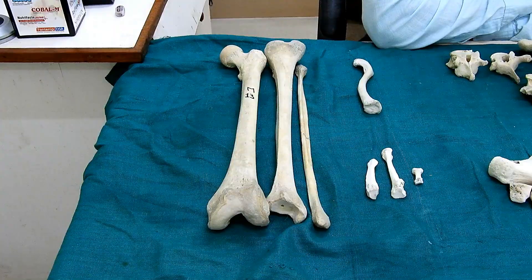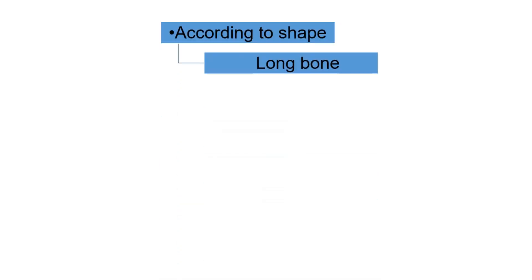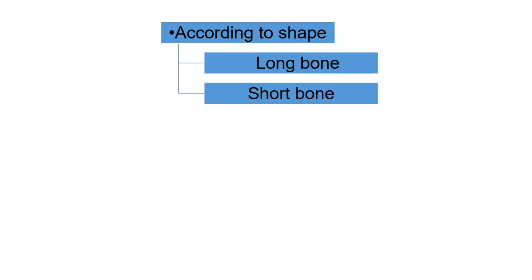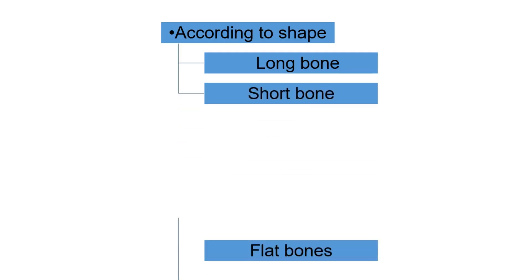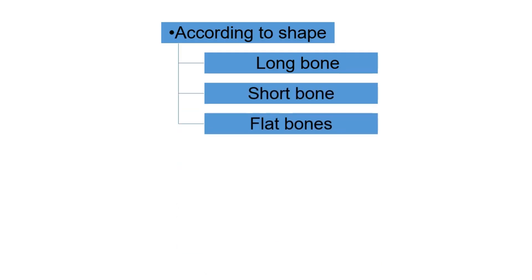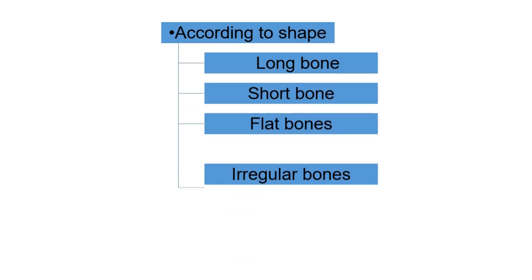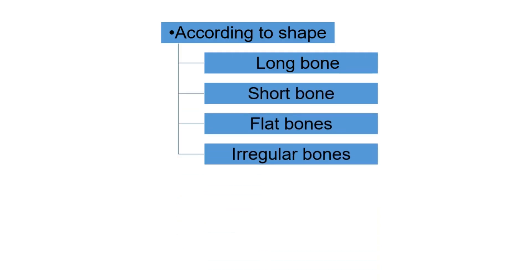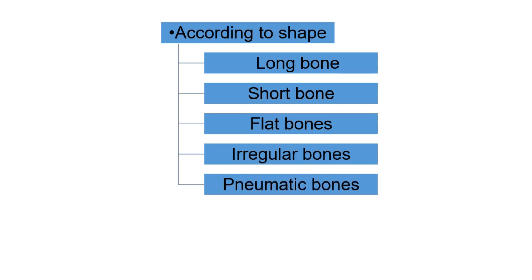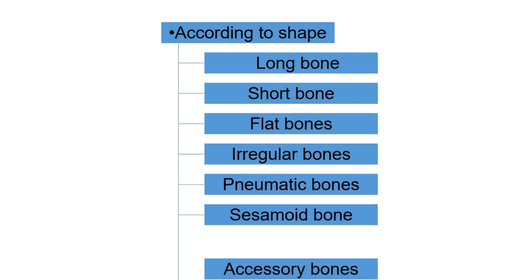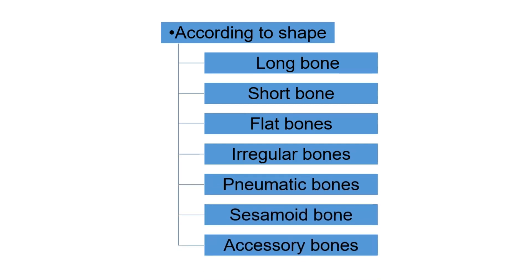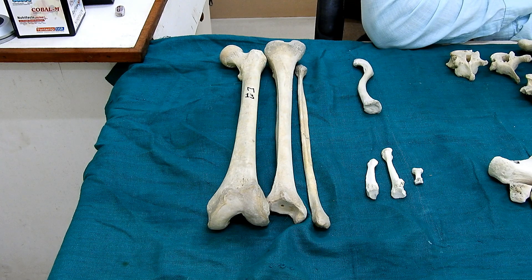According to shape, bone is classified into seven types: the first is long bone, second is short bone, third is flat bone, fourth is irregular bone, fifth is pneumatic bone, sixth is sesamoid bone, and the seventh is accessory bone. We will see them one by one.